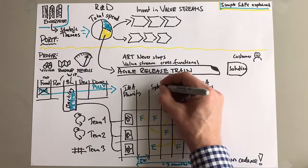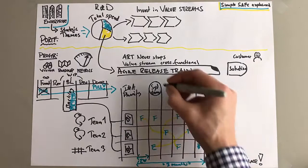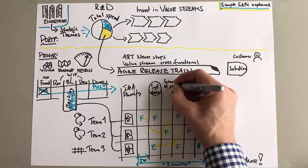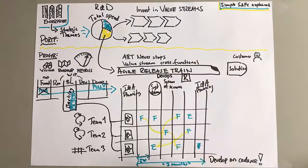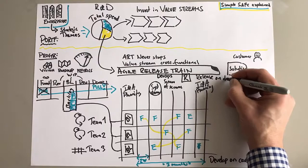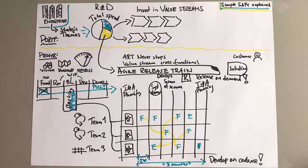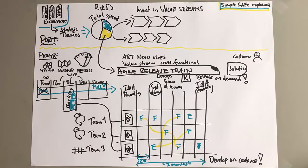Now up on the program level you have demos. Of course each team is working in sprints and demoing for their product owner. But you also do system demos where it all fits together. Very important. And you're releasing - we develop on a cadence and release on demand. DevOps can also lie up in the program area.